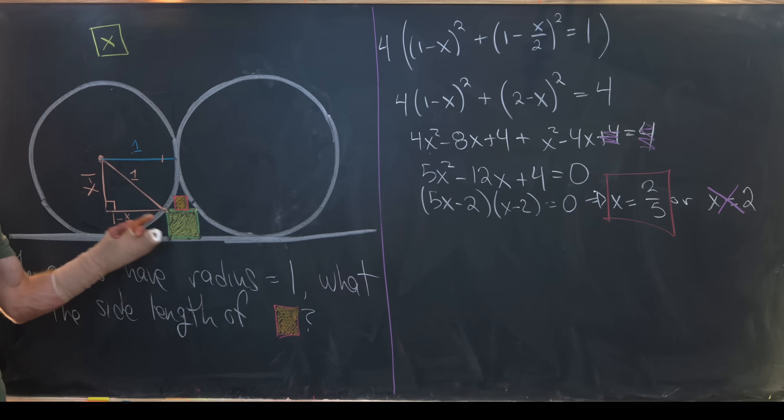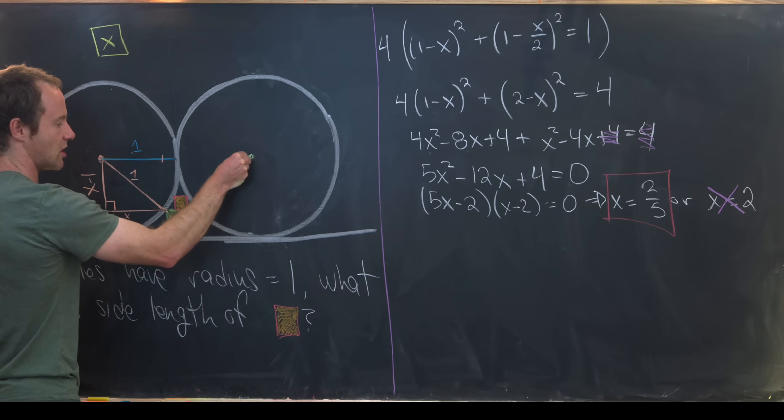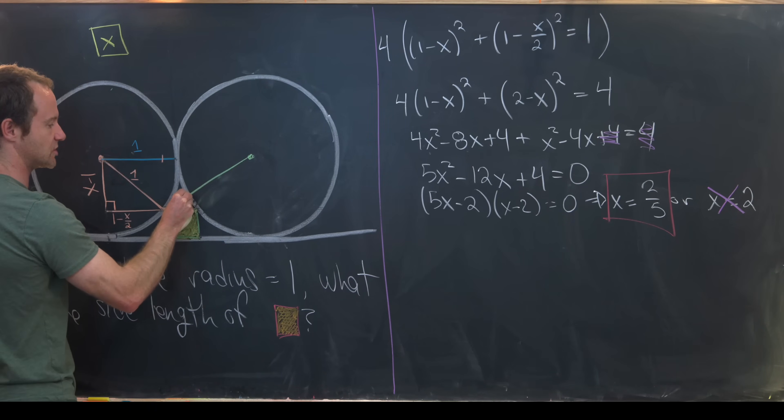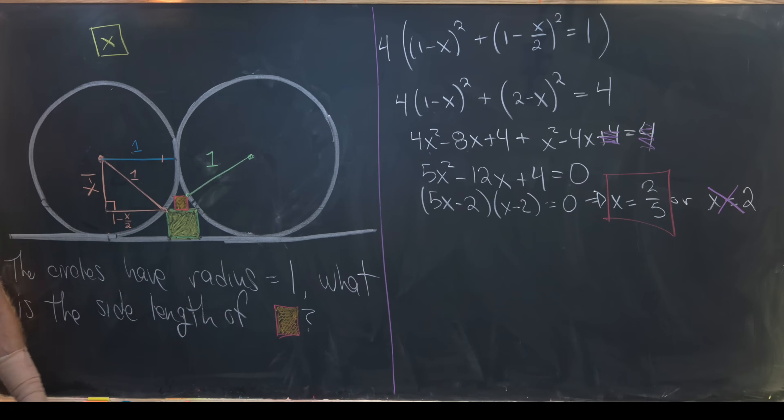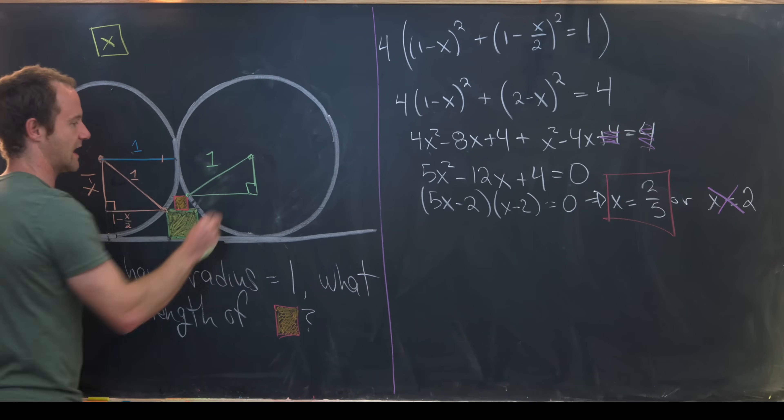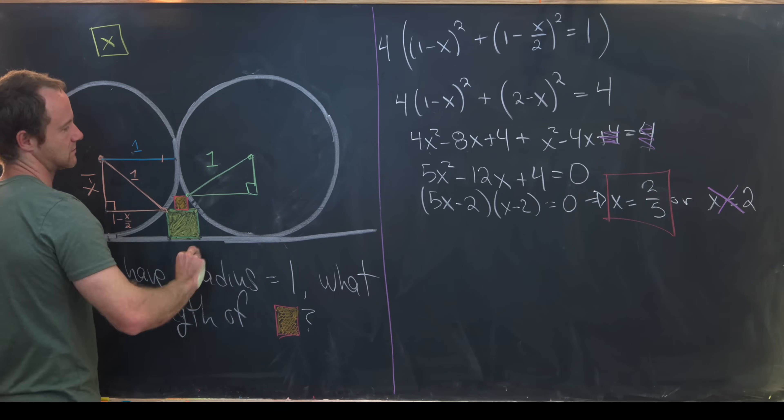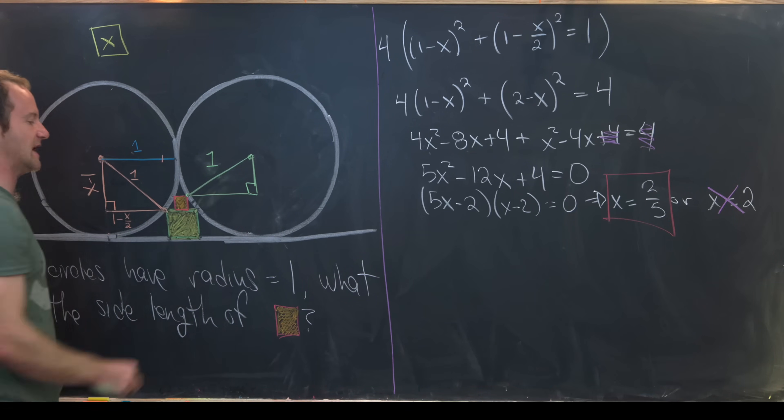And that actually sets us up quite well to do almost exactly the same thing on this other circle in order to find the side length of this orange square. We'll start at the center of this circle, but now we'll draw a radius down to this orange square that has a red boundary. We know that has length 1 because it's a radius of the circle. And now we can complete a right triangle out of that by pushing down a vertical line and across a horizontal line. And now we need to measure the height of this triangle and the base of this triangle.